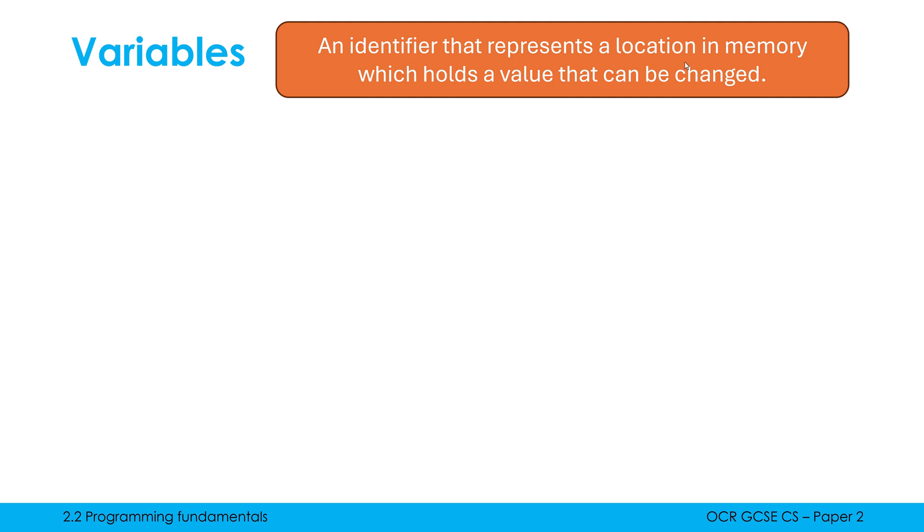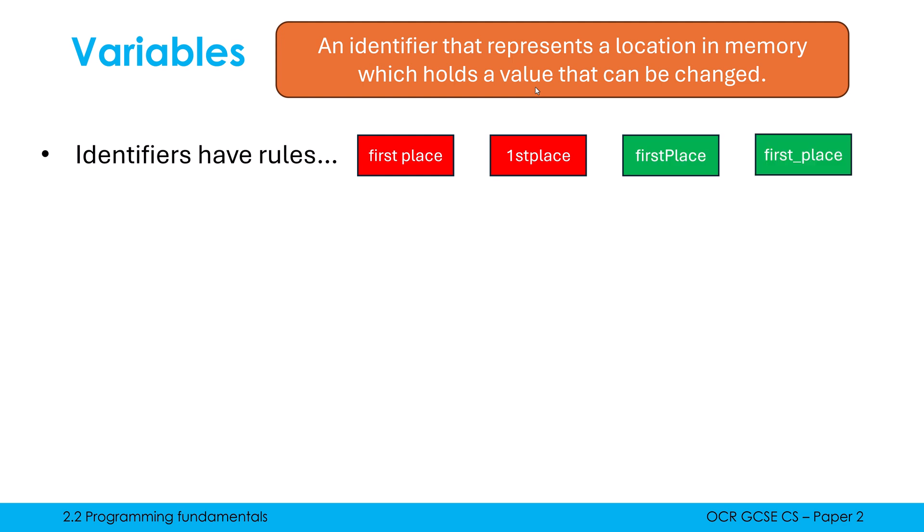Behind the scenes, as you know from paper 1, all data currently open in a computer is being held in memory, in RAM most likely. So a variable is just pointing towards a location in RAM, and it holds a value - that's singular, not values. Multiple values would be something like an array. Identifiers have got certain rules: it has to be one word, you cannot do two separate words as your name, and you can't ever start with a number.